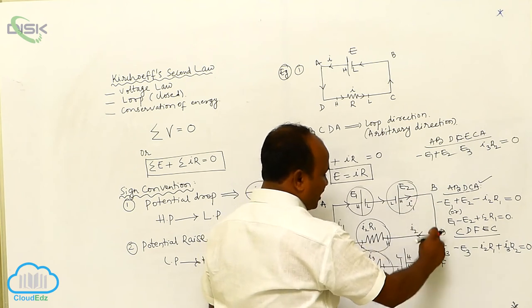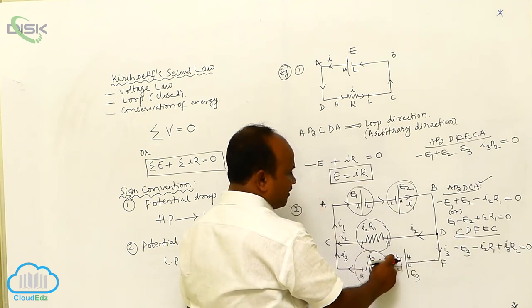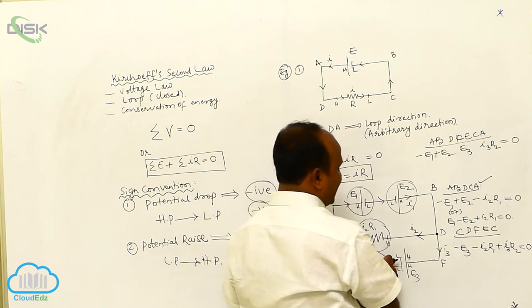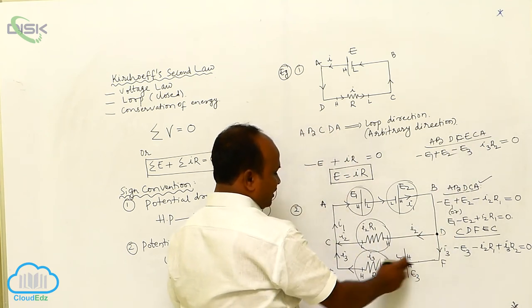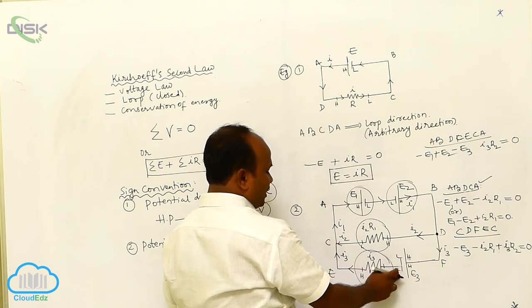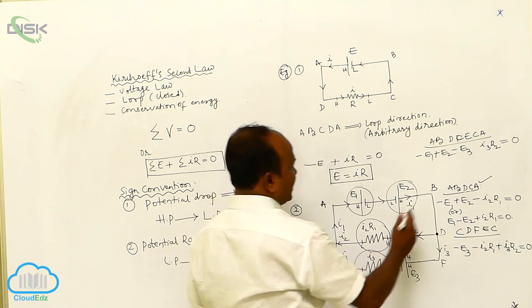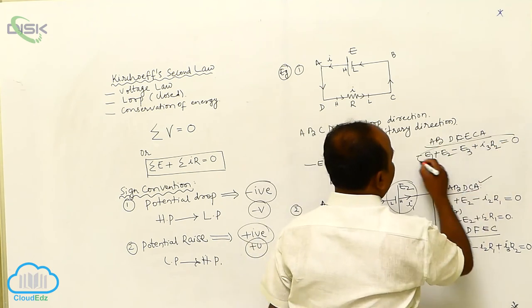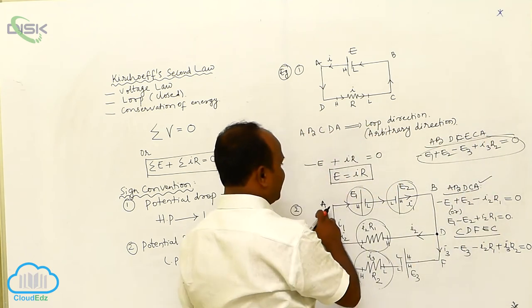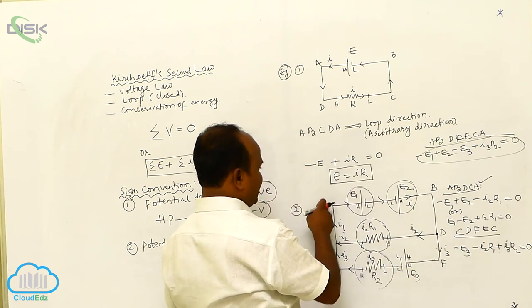As I continue to travel higher to lower, once again, drop is taken as negative. This is negative. Lower to higher, rise is taken as positive. This is Kirchhoff's second law for the loop A, B, D, F, E, C, A.